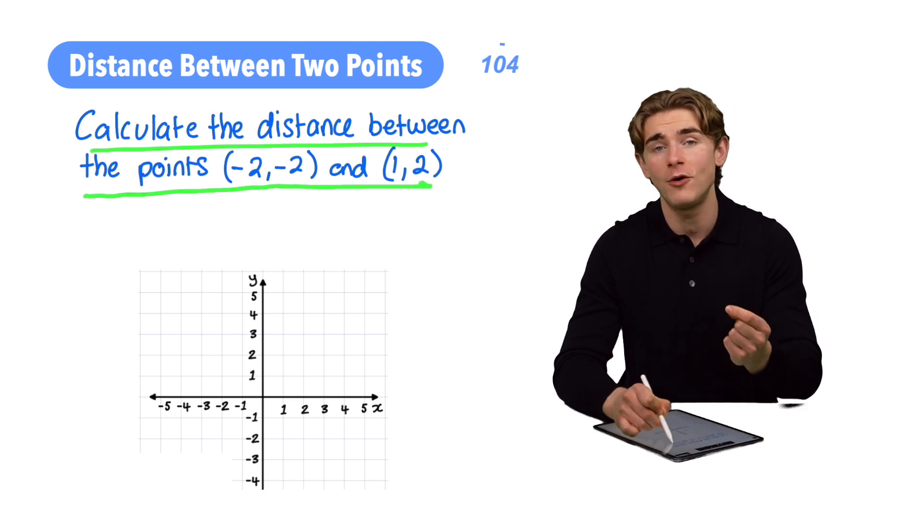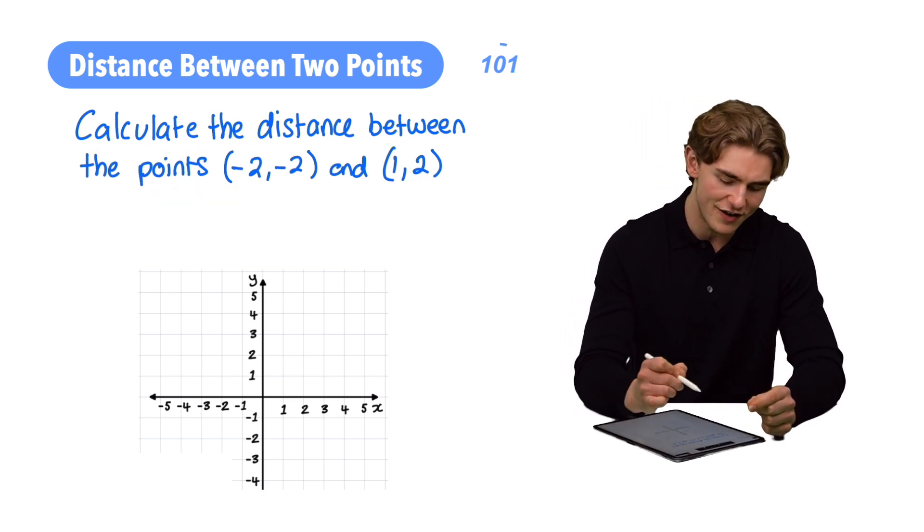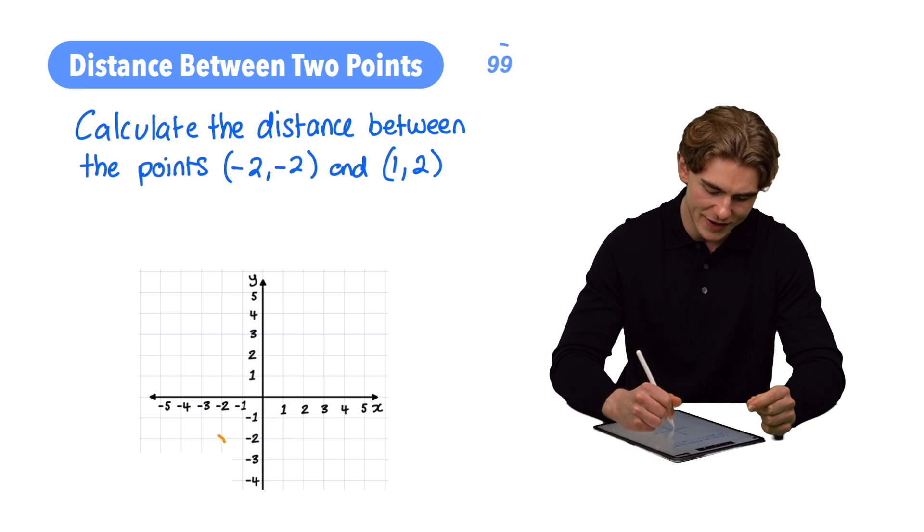Step number one, to help us understand this, I'm going to draw these on a graph. Let's have a look. The point (-2, -2) is going to be down here, and the point (1, 2) is going to be up here.